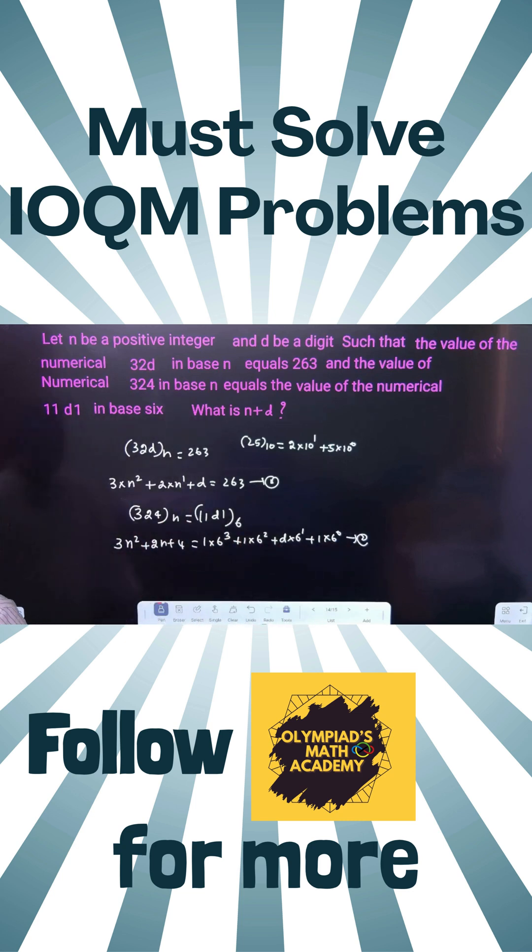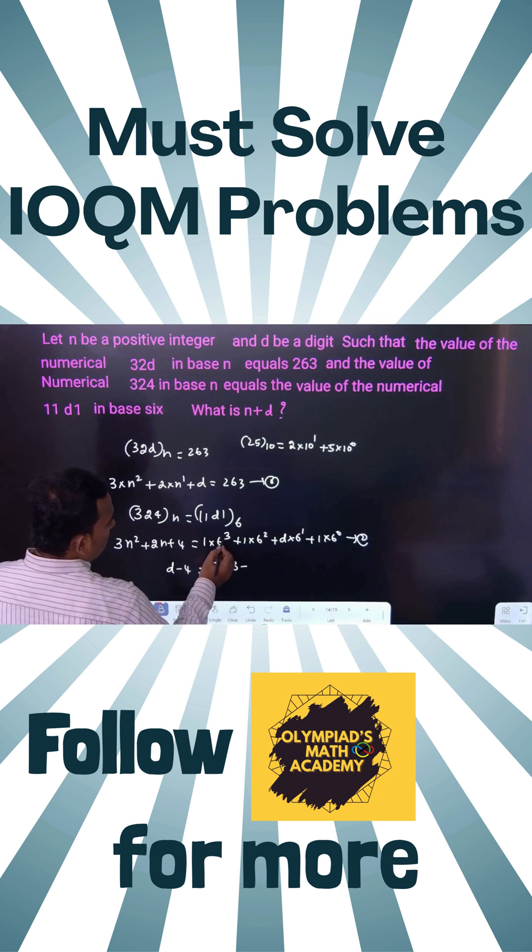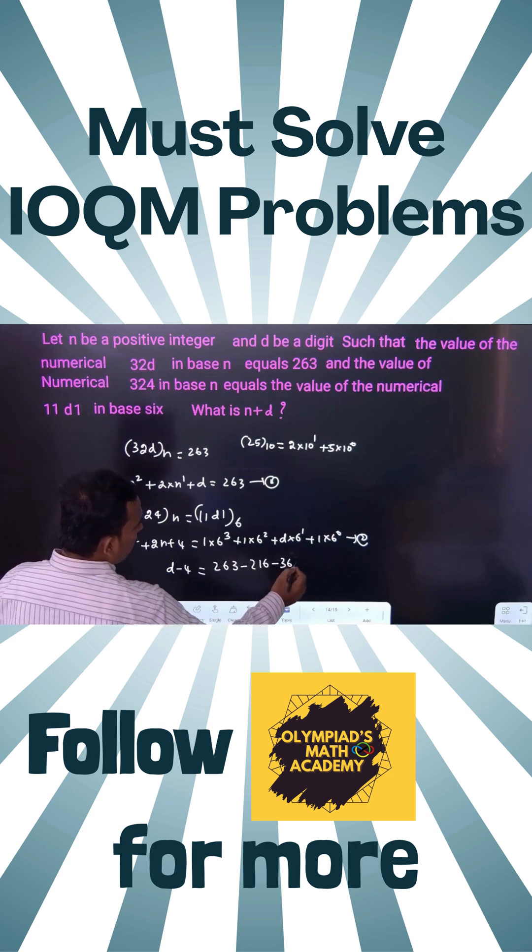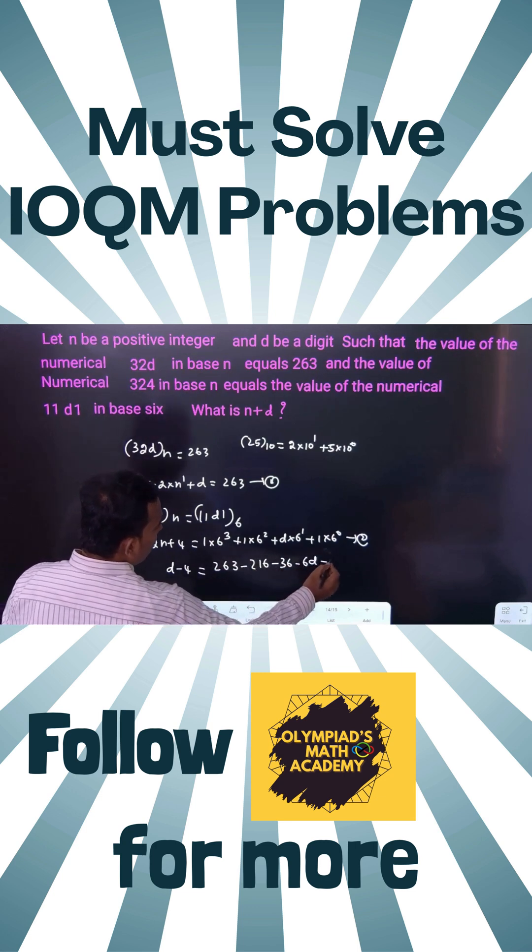You can subtract these two equations. What we will get? 3n² cancels, 2n cancels, leaving d minus 4 on the left side. The right side is 263 minus 6³ which is 216 minus 36 minus 6d minus 1.